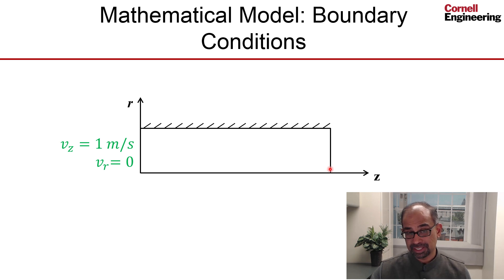This is where the flow is leaving the domain, at that boundary, and we set the pressure to be one atmosphere.